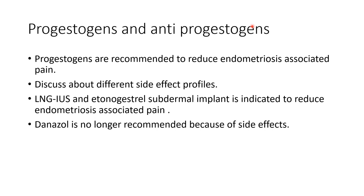Progestogens are recommended to reduce endometriosis-associated pain. It is necessary to discuss side effects with the patient when prescribing: headache, bloating, nausea, vomiting, undue spotting, and most importantly weight gain - typically 3-4 kg over 3 months. Counsel the patient accordingly. The levonorgestrel intrauterine system and etonogestrel subdermal implant are both indicated to reduce endometriosis-associated pain, with the same efficacy as any oral progestogen.